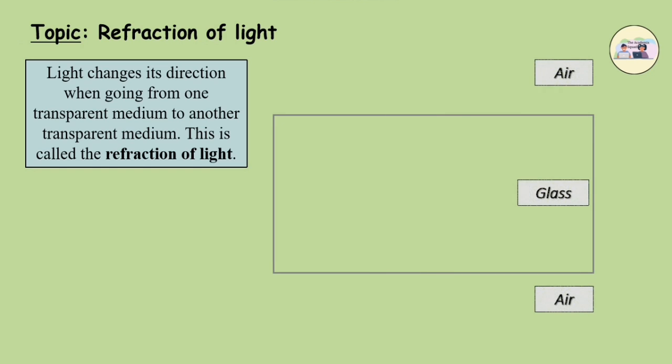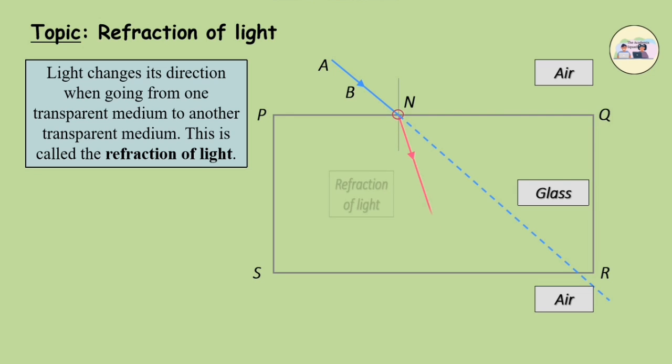Let us consider an example for this. The first refraction occurs when the light ray enters the glass from air at N on the side PQ. The second refraction occurs when the light enters air from the glass at point M on the side SR.